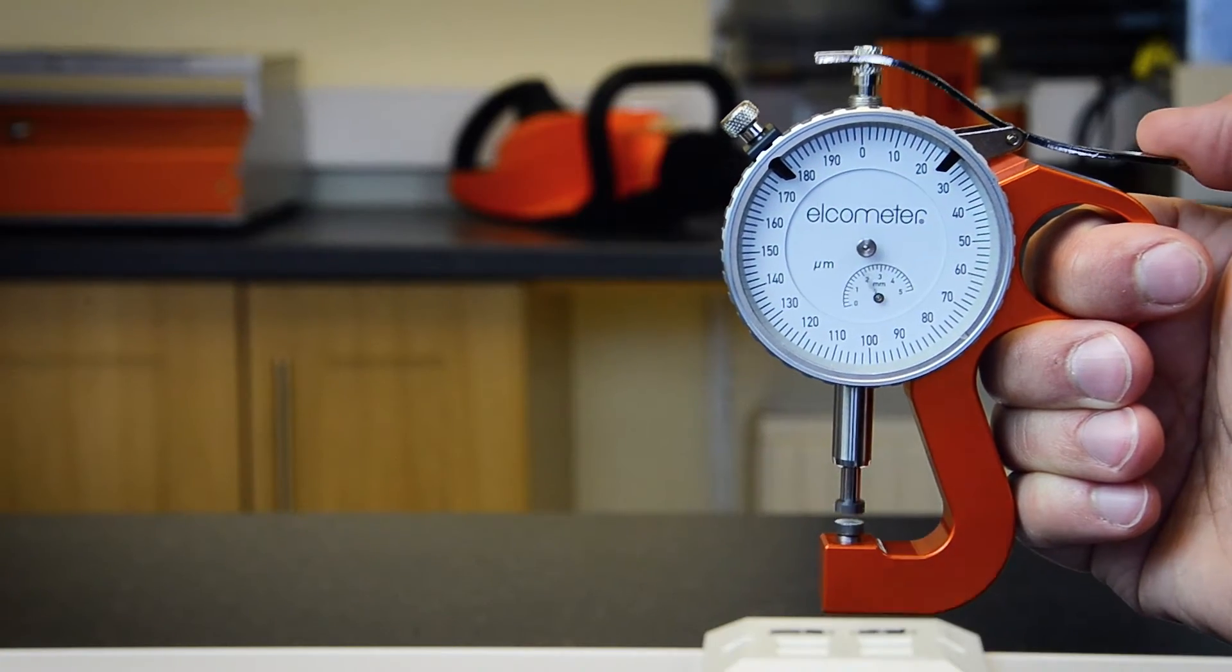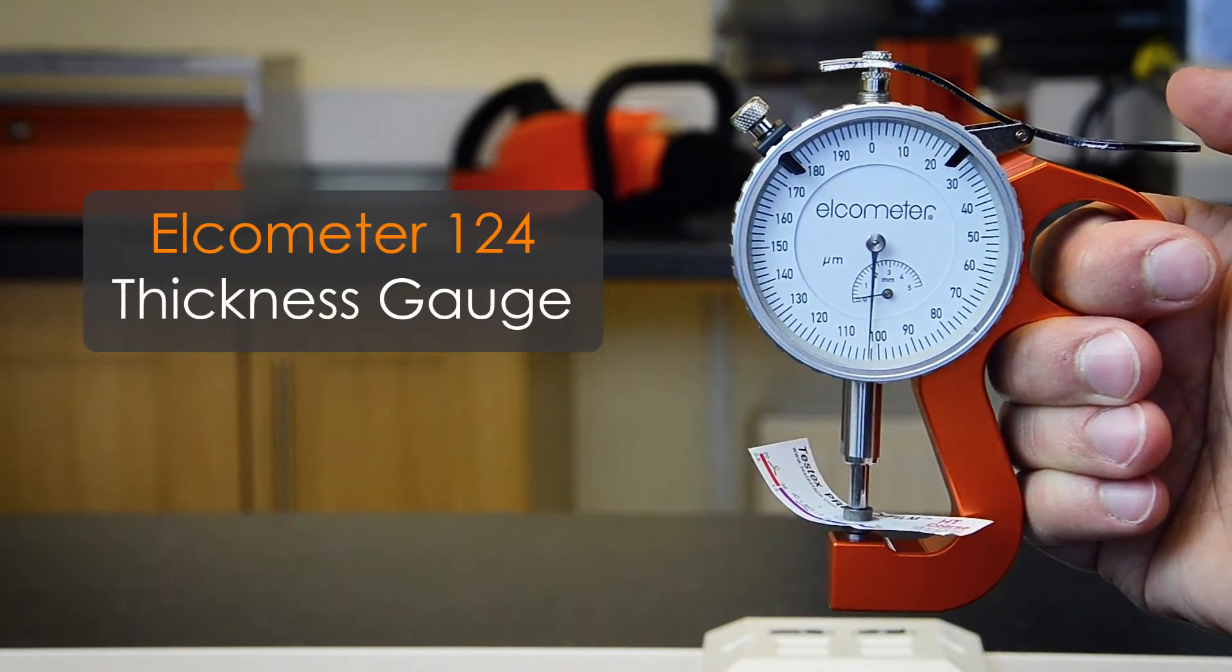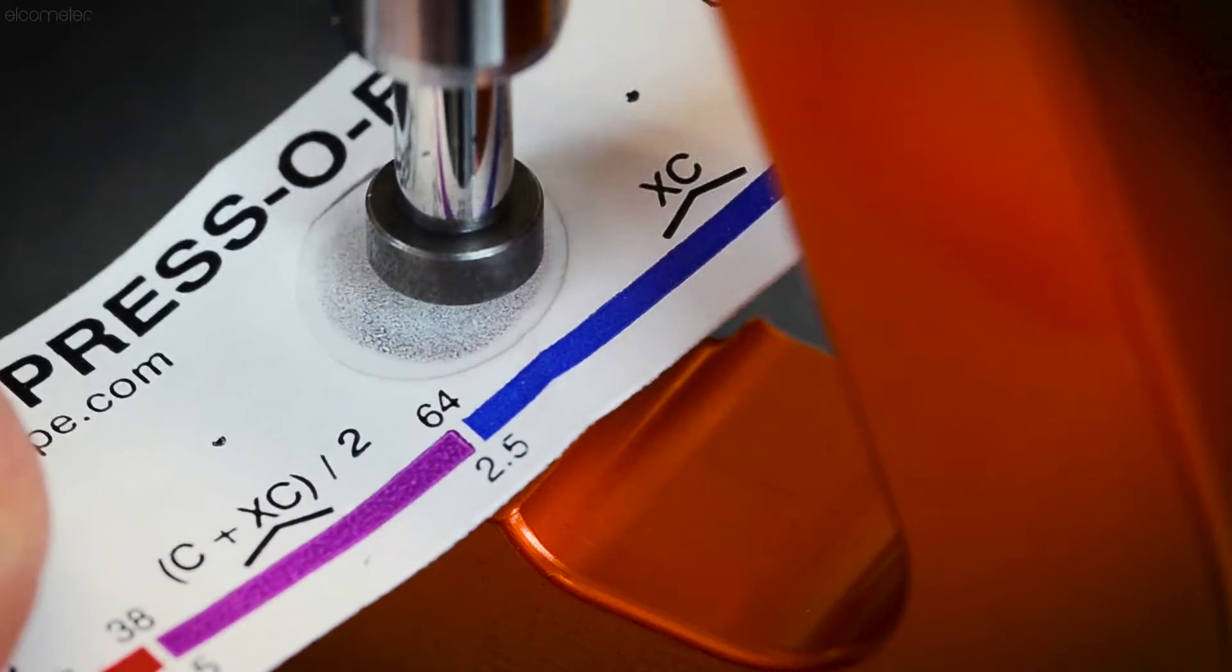The tape is then removed and measured using a thickness gauge, such as the Elcometer 124 gauge. The replica tape method provides a peak to valley height measurement of the profile.